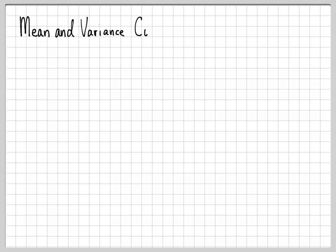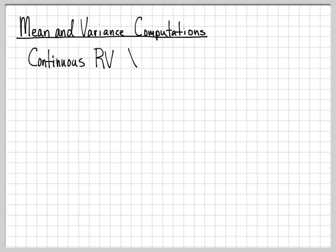In this example, we want to look at computing the mean and variance of a random variable given its probability density function. The density function we're going to work with for the random variable x is a little bit of a contrived example, but it'll give us some practice using the definition of mean and variance in computing this weighted average across the probability density function. The random variable we're going to work with is x.